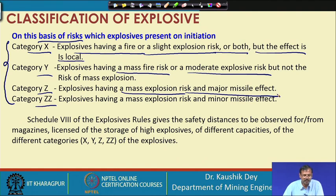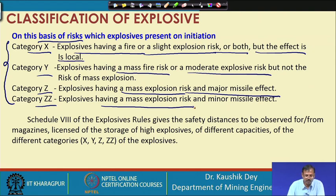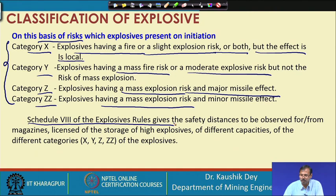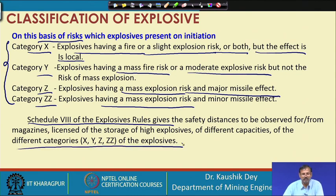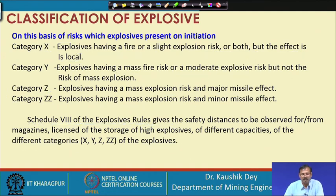Category ZZ gives mass explosion risk where shock generation is very high, but with minor missile effects — meaning the amount of gas generated or the flying-object risk is relatively small. Based on schedule 8 of the explosive rules, the safety distances to be observed from the magazine and the storage of high explosives of different capacities are determined depending on the type of explosive. This risk-type classification is very important while storing explosives in the magazine.